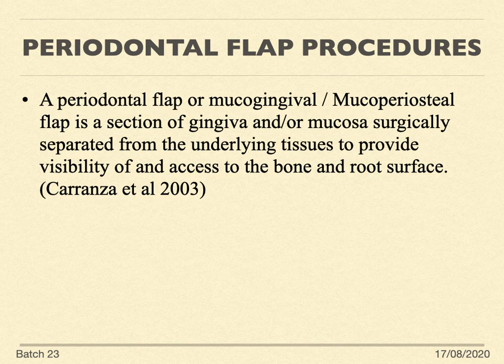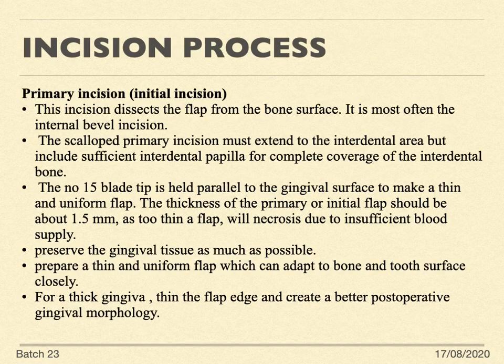To achieve this, we have different incisions. Usually there will be three incisions, though some flaps use two. Most of the time we use three-incision flaps. If it is a three-incision flap, the primary or initial incision will be an internal bevel incision. If it is a two-incision flap, the primary incision will be a sulcular incision.